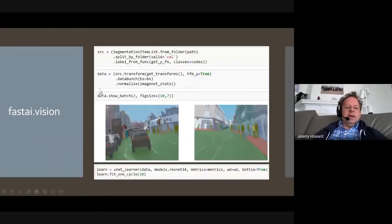With nearly the same one, two, three, four lines of code, or five lines of code in this case, because we're also displaying, you can create a state-of-the-art segmentation model. And when I say state-of-the-art, for example, this segmentation model is, to the best of my knowledge, still better than any published result on this particular Canvid dataset.